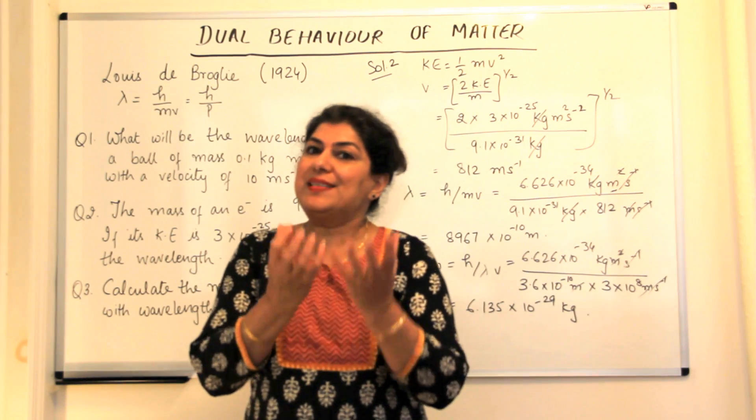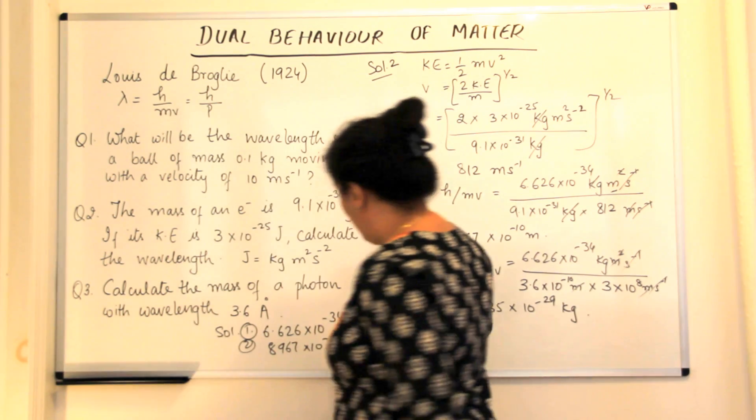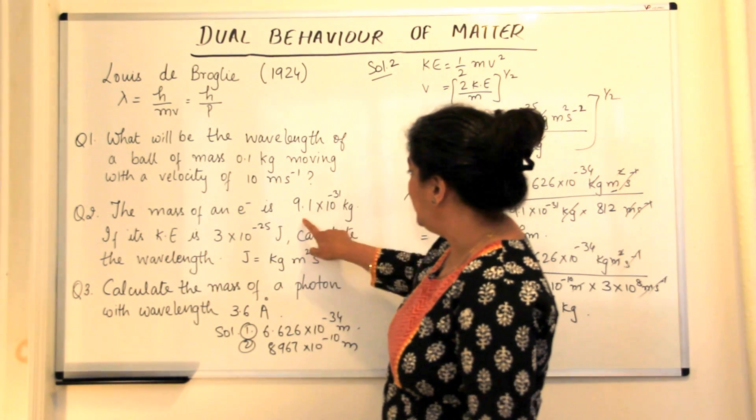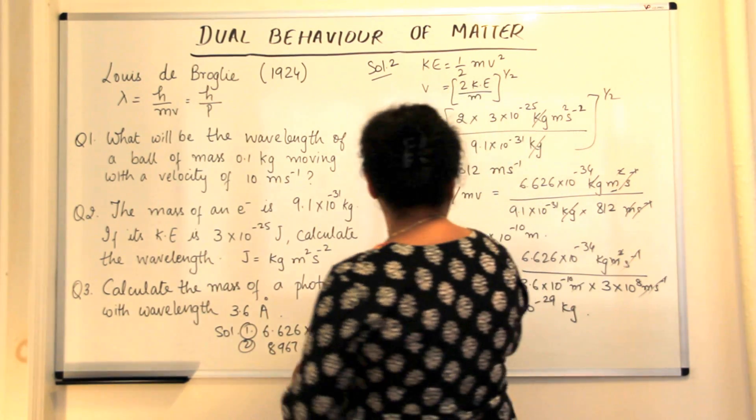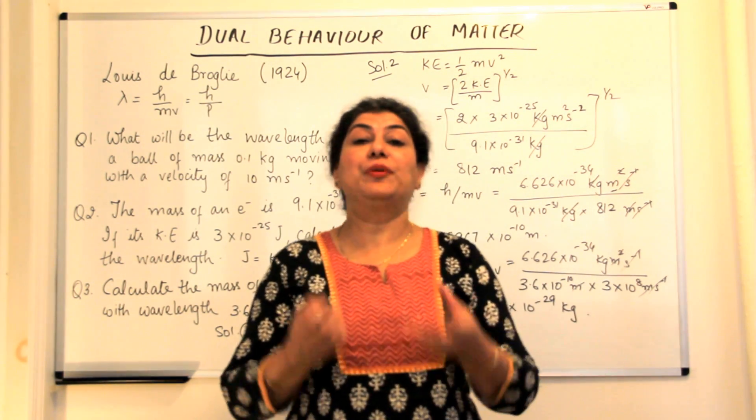So the masses are very, very small. And that is why the wavelength is of 10 to the power minus 10 here. And the wavelength in this case is 10 to the power minus 10 too.